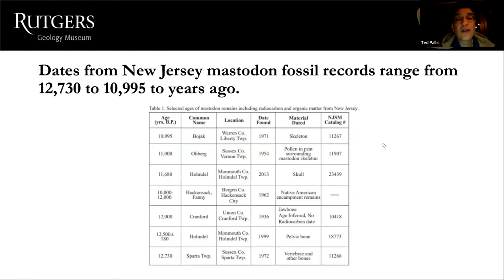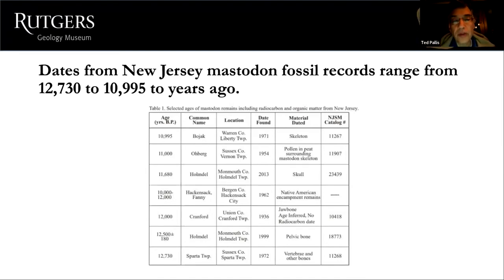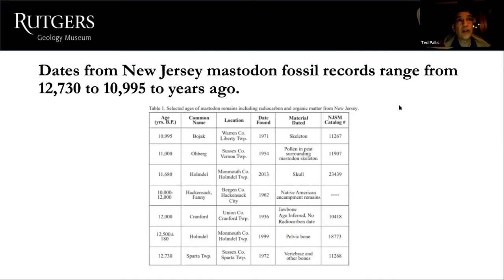Dates from New Jersey mastodon fossil records range from 12,730 to 10,995 years ago based on radiocarbon dating and surrounding context like peat bogs or Native American encampments. So the time when mastodons were in New Jersey was only about 2,000 years, even though they were around for maybe 30 million years overall.